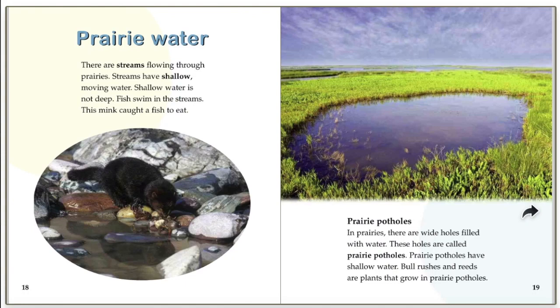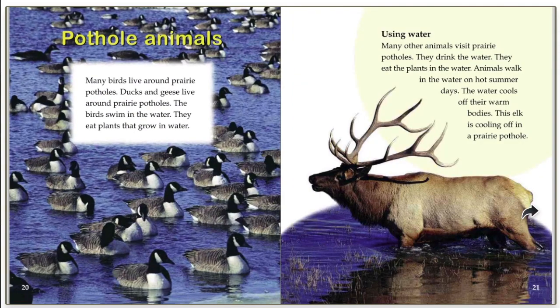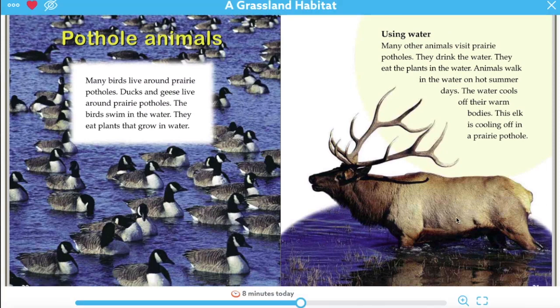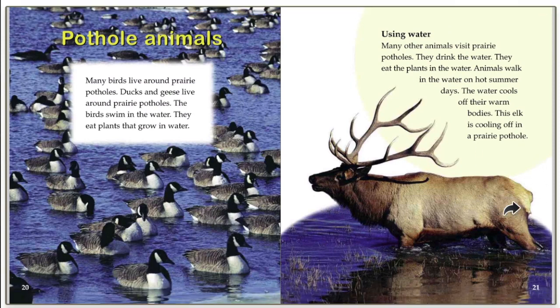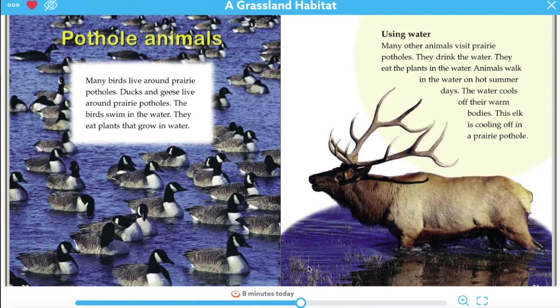So maybe not only will I draw some plants, but maybe I'll draw a stream and maybe a prairie pothole. Many birds live around prairie potholes - ducks and geese live around them. The birds swim in the water and eat the plants that grow in the water. Plants grow in the prairie pothole. I can look at this picture and see little grasses sticking up in the water. Those are the plants in the prairie potholes - that's a good detail I could add to my illustration.